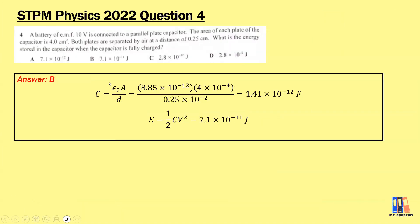First question from 2022: a battery of EMF 10 volts is connected to a parallel plate capacitor. Area is 4 cm², both plates separated by air at a distance of 0.25 cm. What is the energy stored when the capacitor is fully charged? We get the capacitance using epsilon A over d, then apply energy = half CV squared. The answer is 7.1 × 10⁻¹¹ joules.